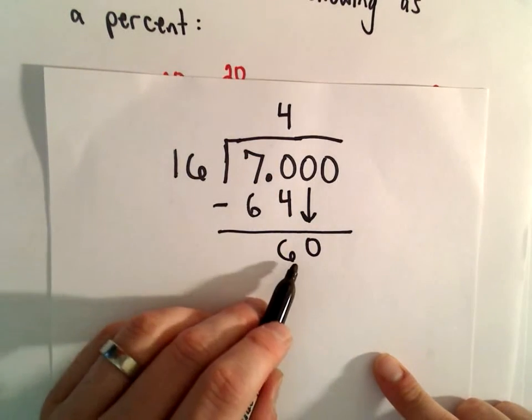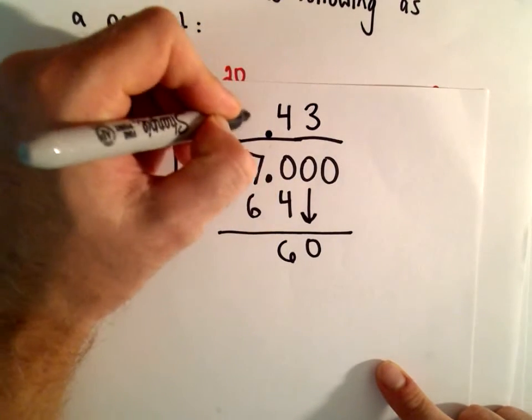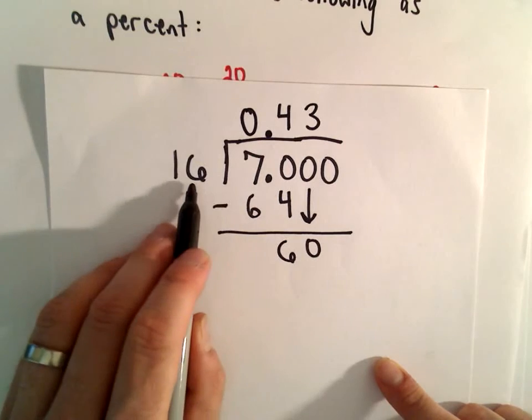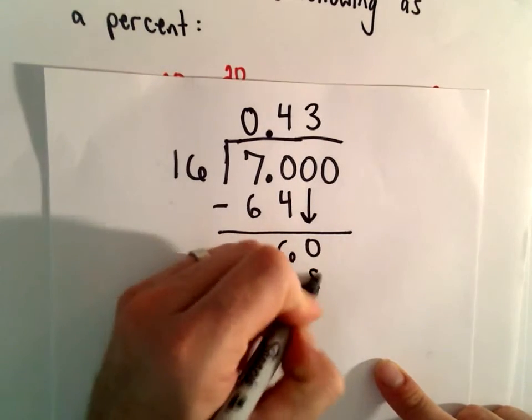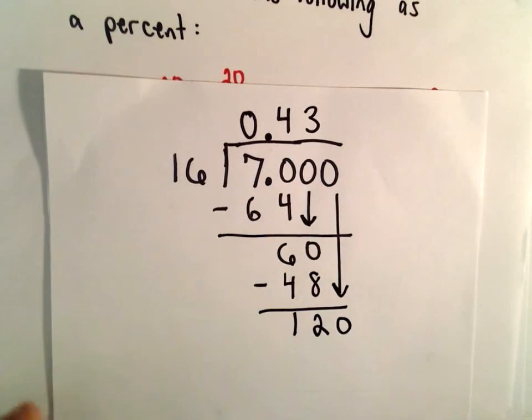Okay, 16 will go into 60 three times, so let's see, I'm going to put my decimal there and my 0 there. 3 times 16 is going to be 48. If we subtract, that'll give us 12. We can drop down our 0.